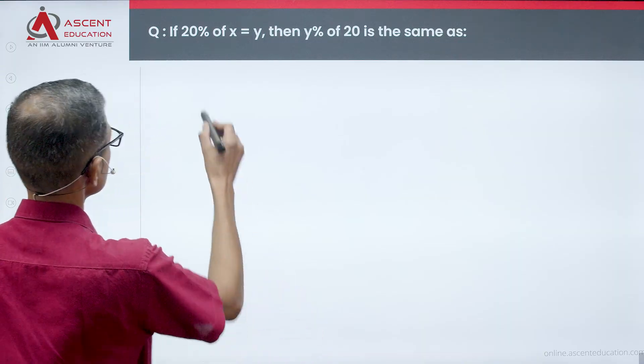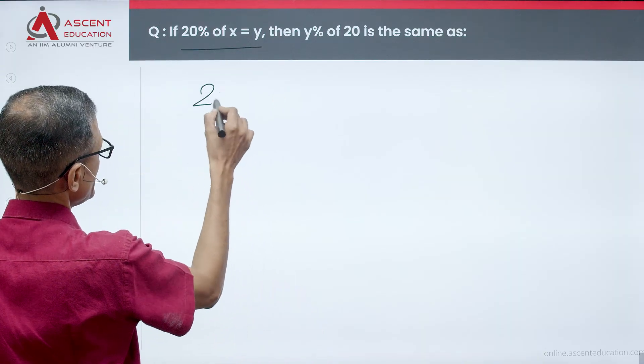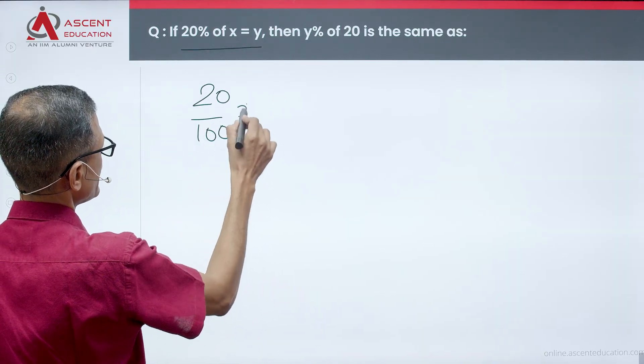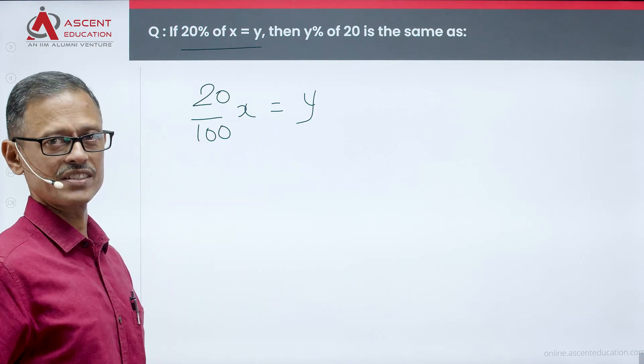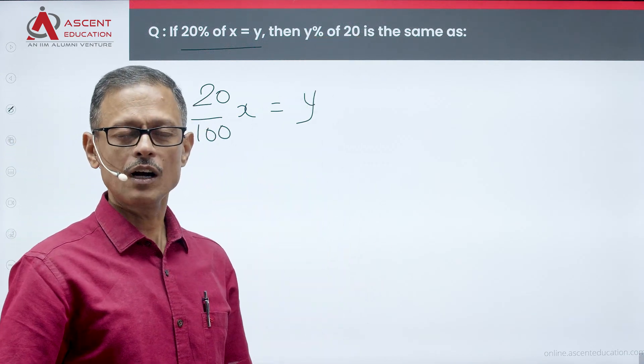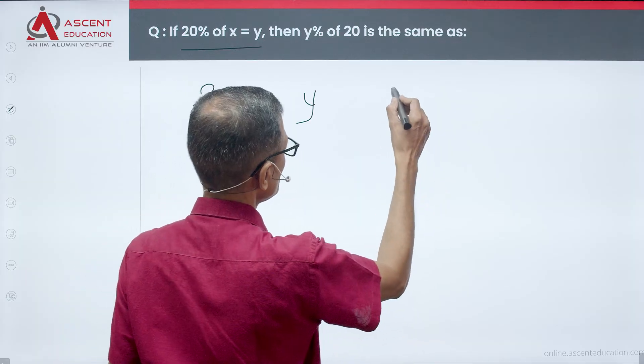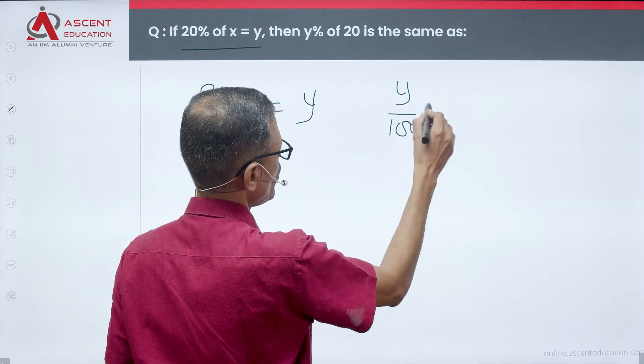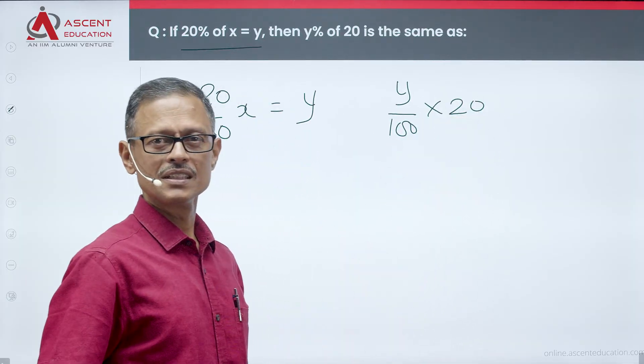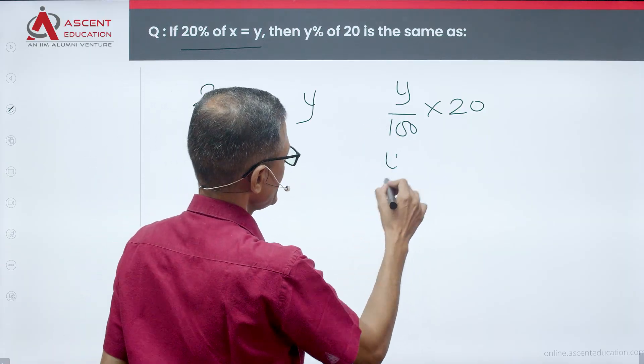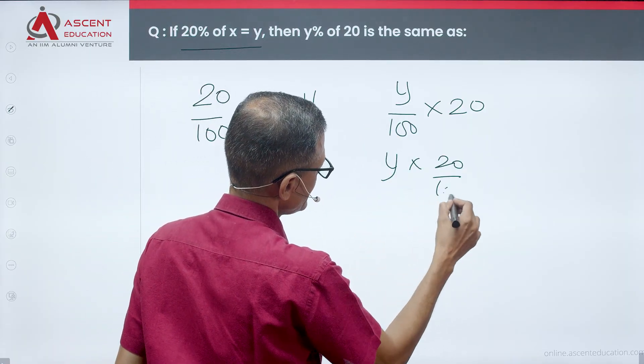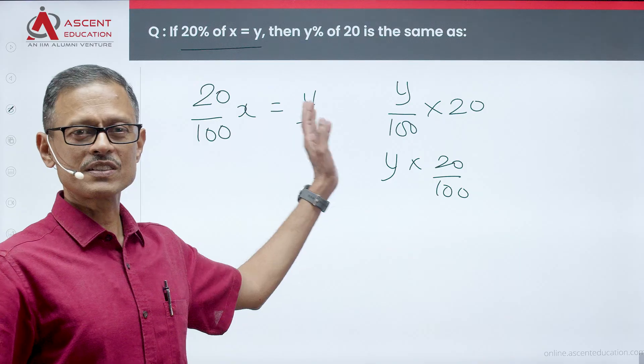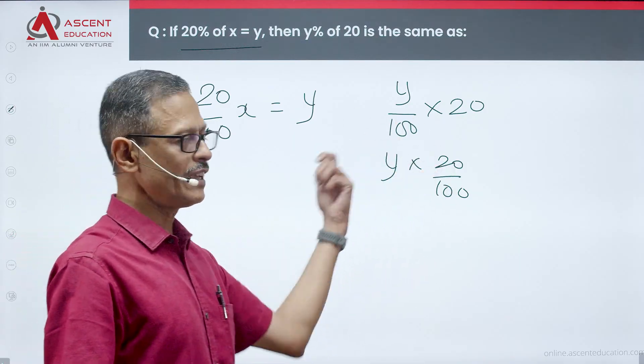So, 20% of x, that's 20/100 of x is equal to y. This is 20/100 of x is equal to y. Y% of 20, that's y/100 of 20, is the same as 20% of y.